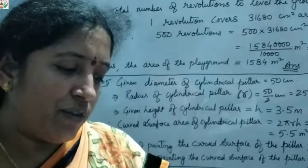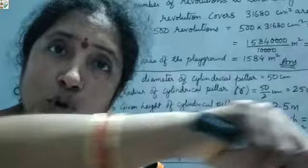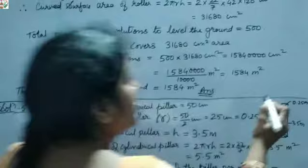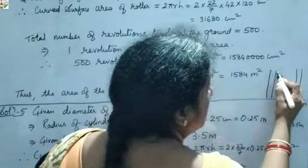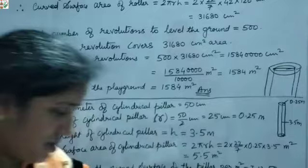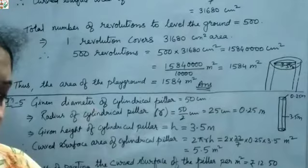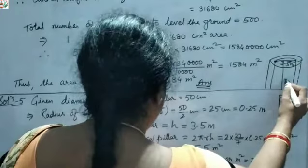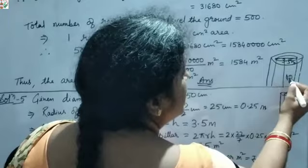Question 7: the inner diameter of a circular well is 3.5 m. The depth of that well is 10 m. Find the inner curved surface area. You have seen wells — the hollow part has a cement layer on the inside. The inner diameter from side to side is 3.5 m.